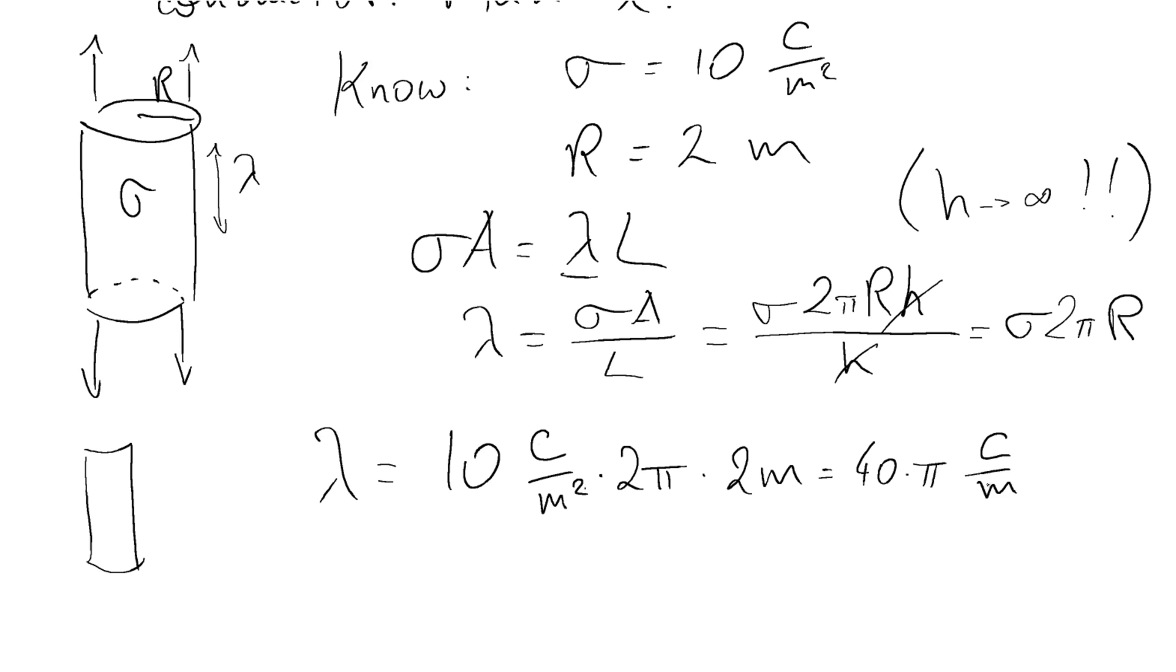And that's precisely what we wanted, because we were looking for a linear charge density. In terms of an actual decimal number, this in fact turns into 125.7 Coulombs per meter. And now you actually have a useful number that you can actually do a lot with.